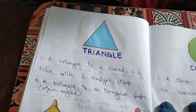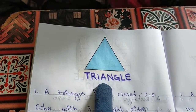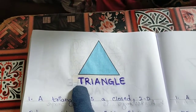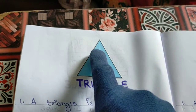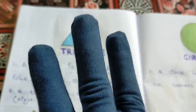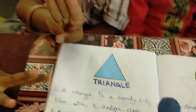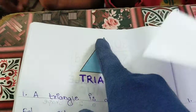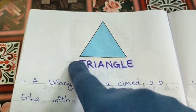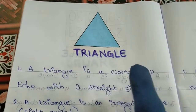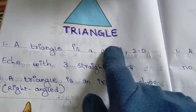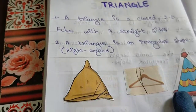Next shape — what is this? Triangle! Triangle means it has three angles. One, two, three — three angles. Tri means three. It has three corners and three straight sides. It is a closed figure and a 2D shape. It can come in irregular shapes as well.